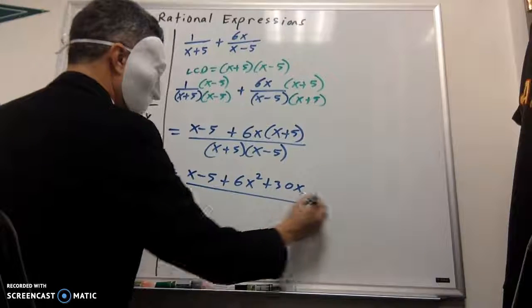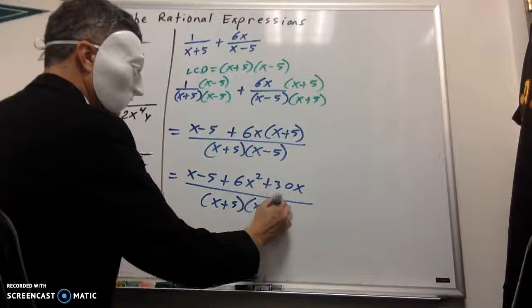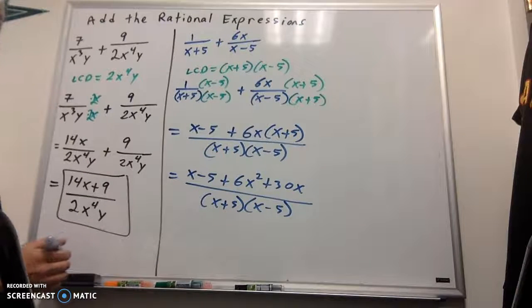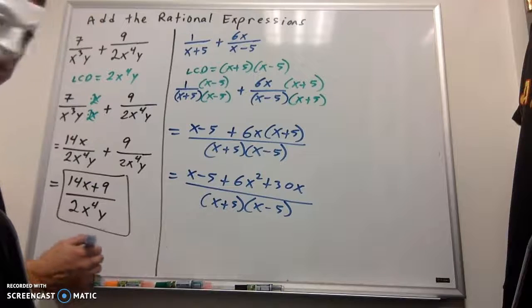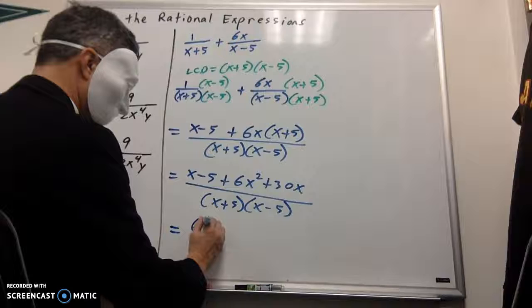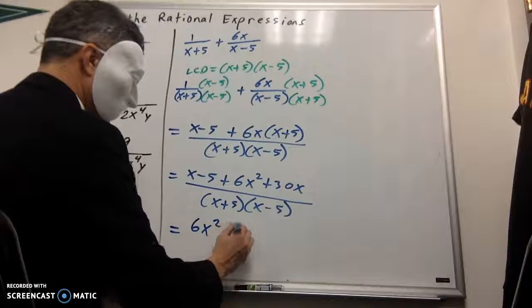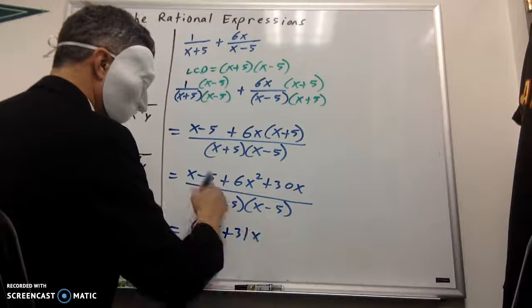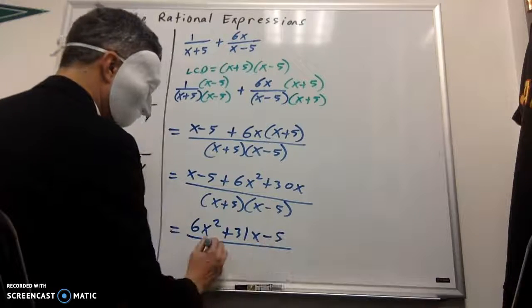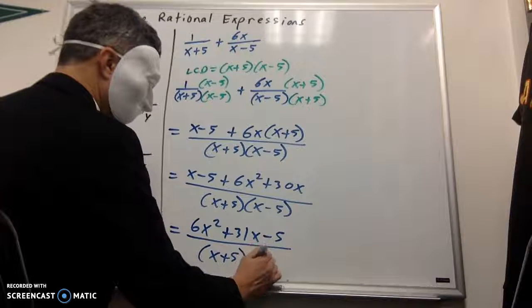And now I'm going to combine like terms in the numerator. 6x squared, my x and my 30x become 31x, and I've got my minus 5 here, and in my denominator, x plus 5 and x minus 5.